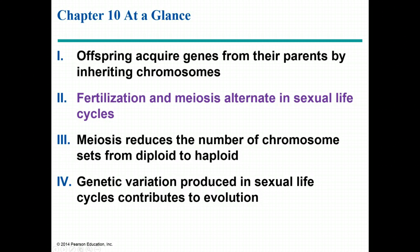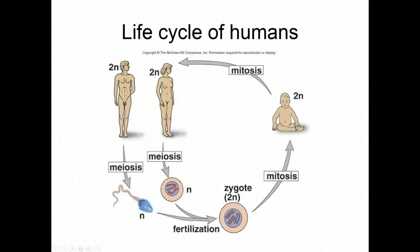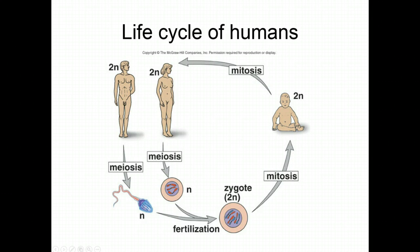Let's move to concept 2: fertilization and meiosis alternate in sexual life cycles. A life cycle is a generation-to-generation sequence of stages in the reproductive history of an organism. Meiosis in human males is part of sperm production, and meiosis in human females is part of egg production. When a haploid sperm fertilizes a haploid egg, the zygote is diploid. The zygote undergoes mitosis as it develops into a newborn child, and mitosis continues after birth until the individual reaches maturity, then the life cycle begins again.